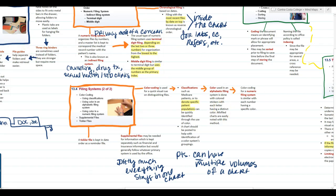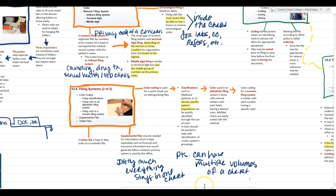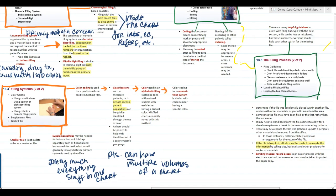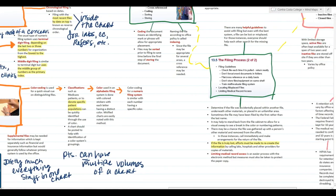The last item in this section is a tickler file, which is kept in date order as a reminder file. A tickler file is meant to tickle your brain and remind you to do something — it's basically just a reminder to complete a task.